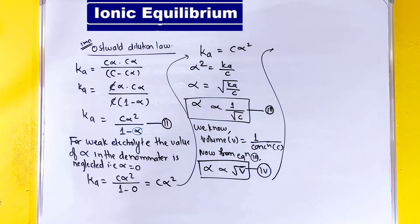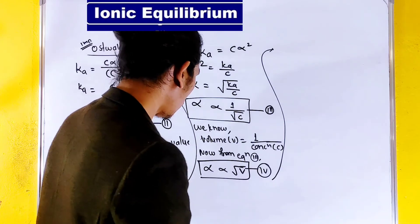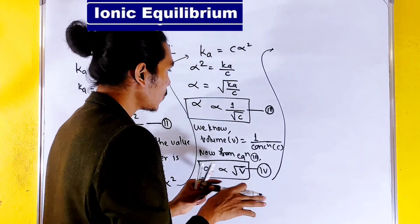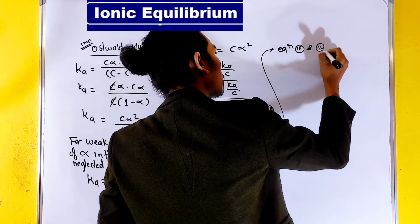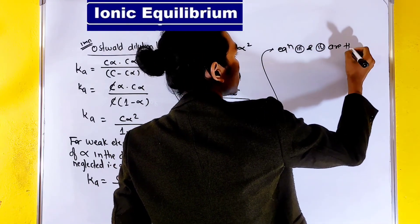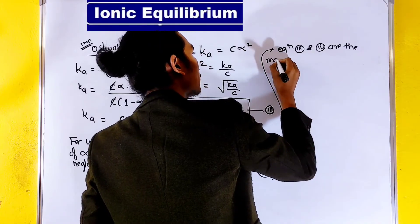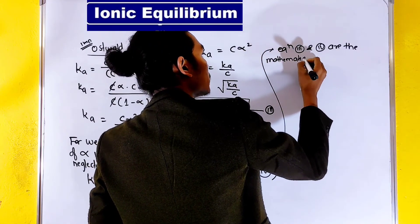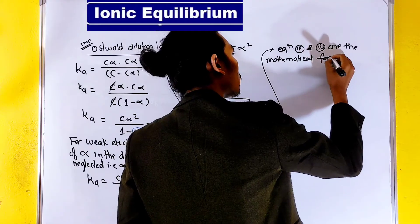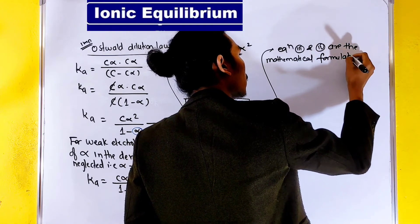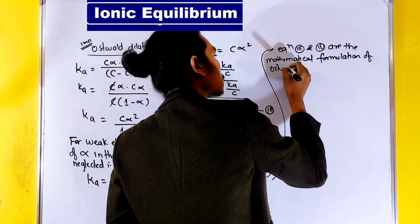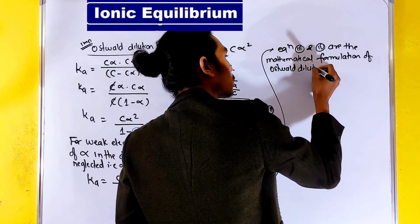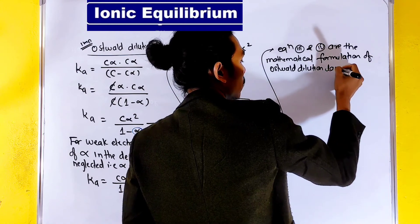We now have the formulation of Ostwald's Dilution Law. Alpha equals the expression from equation 3, and equations 3 and 4 are the mathematical formulation of Ostwald's Dilution Law.